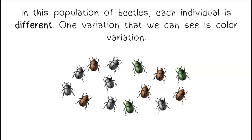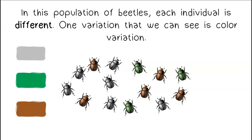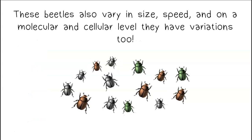In this population of beetles, each individual is different. One variation that we can see is color variation. The color of each beetle is determined by the genes that they inherited from their parents. These beetles also vary in size, speed, and on a molecular and cellular level, they have variations too.